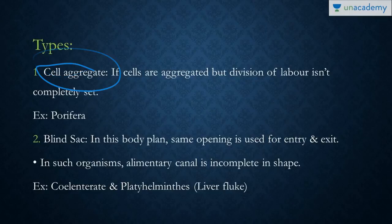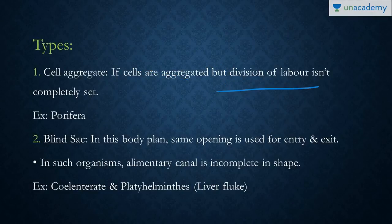The first type is the cellular aggregate. This means that the cells are aggregated but tissues are not formed — that is, the division of labor isn't completely set. It is present in only one phylum, that is Porifera, or the sponges.